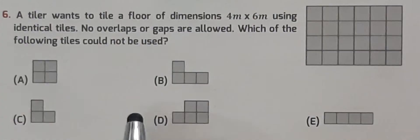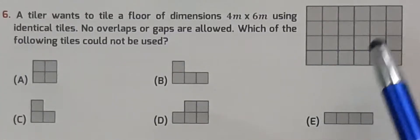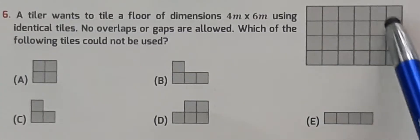So second one is B. First like this, then this, this, this, and then this and this. So it means B is also fitting, so it is not the correct option.